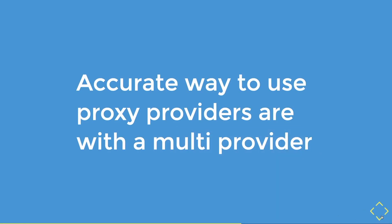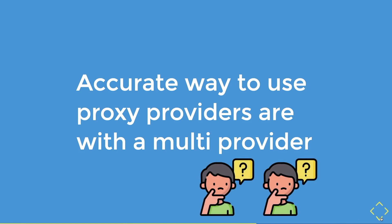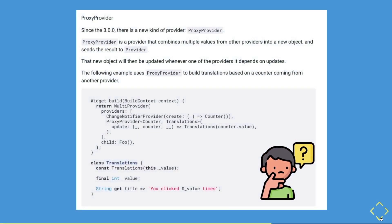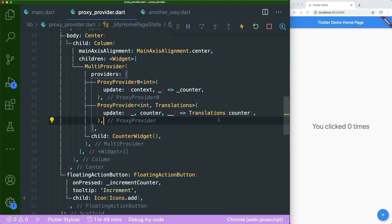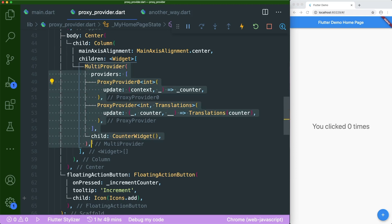Why do I say a multi-provider? In the homepage of the documentation, the proxy provider has been shown to be inserted in a multi-provider — which is a little confusing because it's not shown inside the actual proxy provider documentation. So I'm going to explain exactly how you use this proxy provider. We have a similar counter app, but this time I've added a proxy provider with a proxy provider zero in a multi-provider.